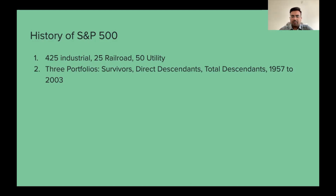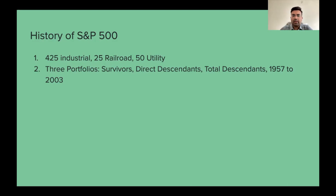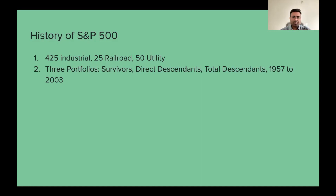The second portfolio is the Direct Descendants. In the Direct Descendants portfolio, Jeremy Siegel did the following: if there was a merger, acquisition, or spin-off, the new shares of the new spun-off company were immediately sold and the proceeds were reinvested back into the parent company.